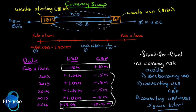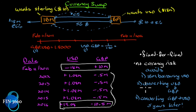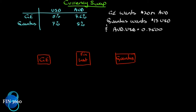This is called a fixed-for-fixed swap because IBM is paying a fixed rate on pounds and BP is paying a fixed rate on dollars. There is no currency risk because it avoids IBM borrowing US dollars, converting those dollars to pounds, and then converting those pounds back to US dollars five years later. Now let's look at the currency swap in detail using the comparative advantage argument.